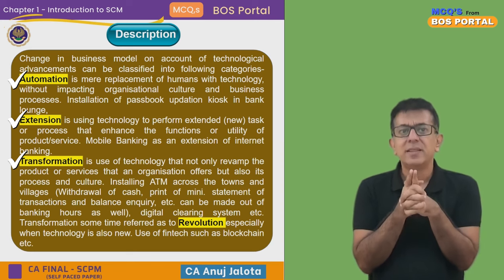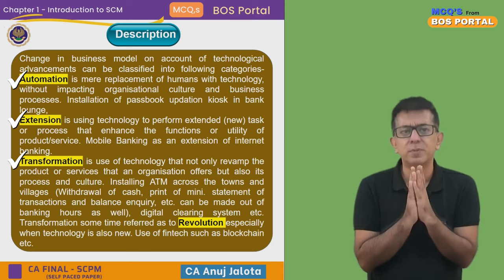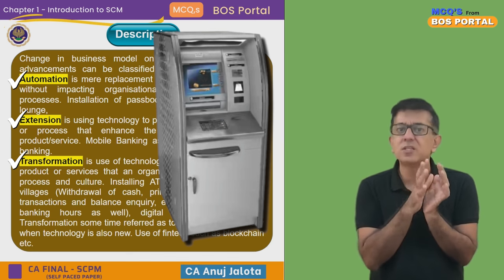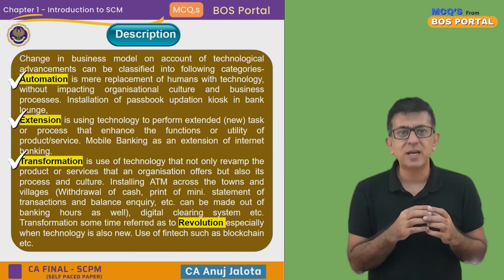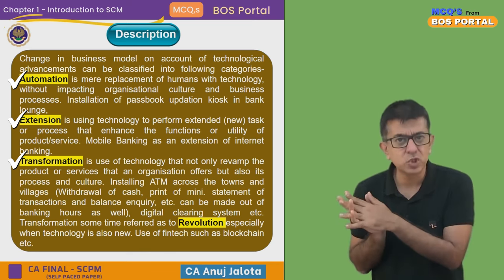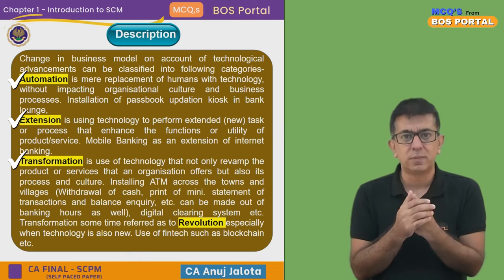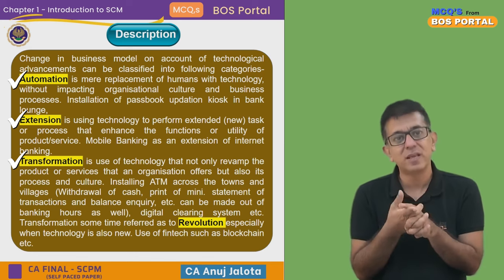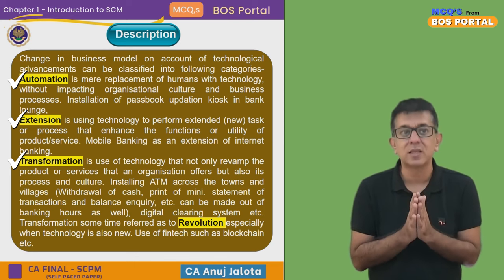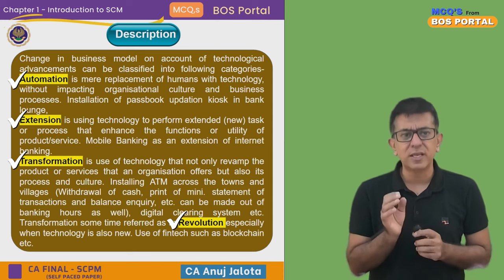Third — Transformation. This is very important. It is the use of technology not only to revamp the products an organization offers but also the processes and the culture. One of the best examples is installing ATM machines across towns. ATM machines changed the culture — many staff were replaced by ATMs. Earlier you might have needed five cashiers, but today one ATM machine does that job, plus mini statements and other things can be printed. That is transformation.